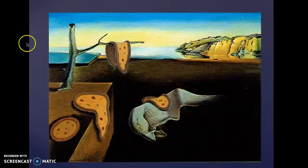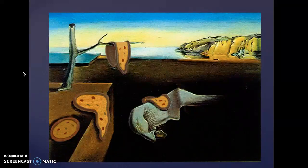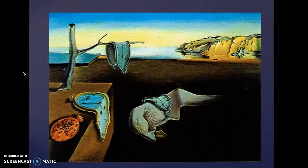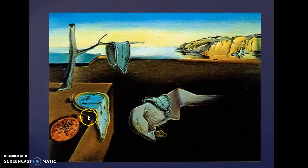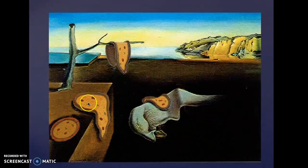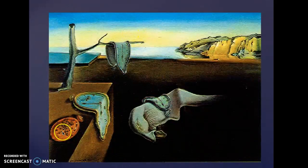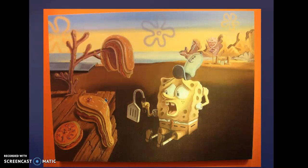Here's another painting that has parodies created of it — a painting by the artist Salvador Dali. What artists will do with his painting is take the well-known objects and turn them into funny objects. You can see how the clocks are turning into pizzas. This artist took this very famous painting and turned it into a SpongeBob version — they look very similar but you can obviously tell which is the funny version.